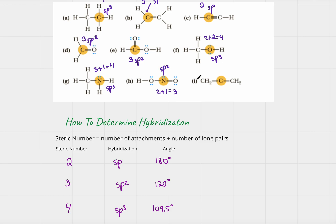For the last one, this carbon is attached to two atoms — two carbons — and it has no lone pairs, so its hybridization must be sp. This is Maya Alochi from Transformation Tutoring, and I really hope you enjoyed this video.